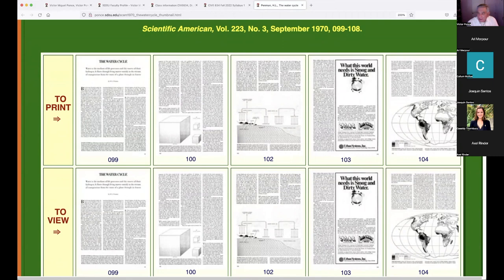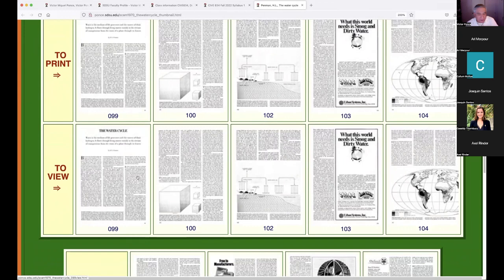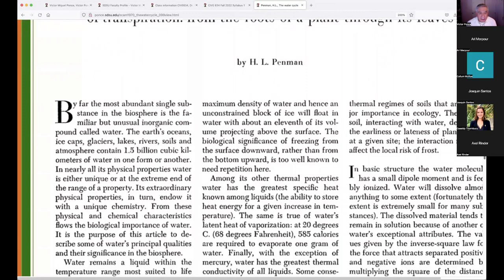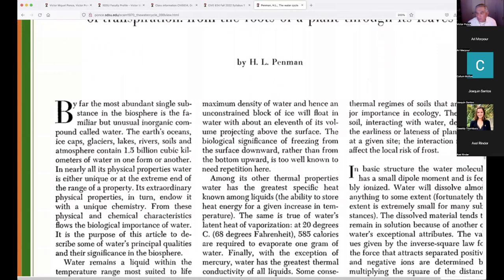They gave Penman the authorization to write one on the water part of the environment. This led to this paper called The Water Cycle by Harold Penman, published in Scientific American, 1970. I want you to read this paper. After all, Penman is one of the greatest hydrologists of all time. Obviously by this time he's deceased.